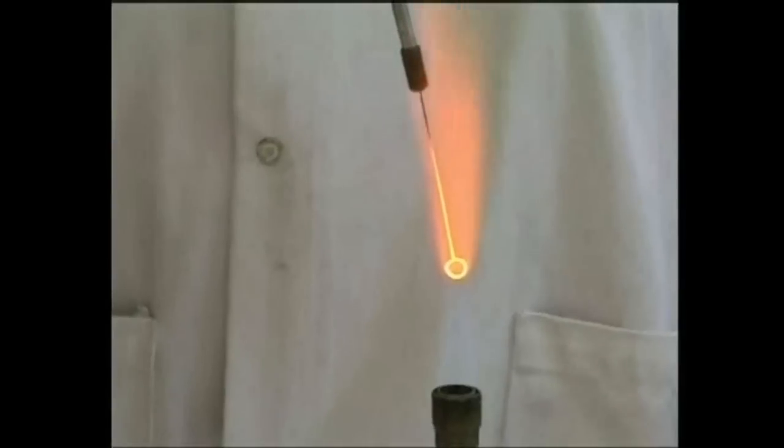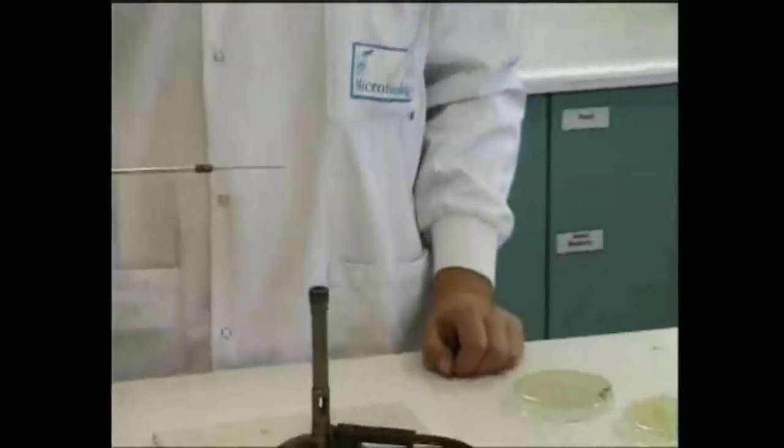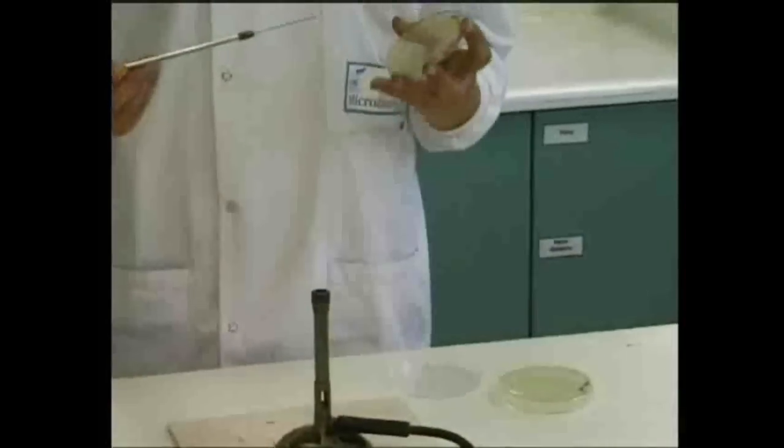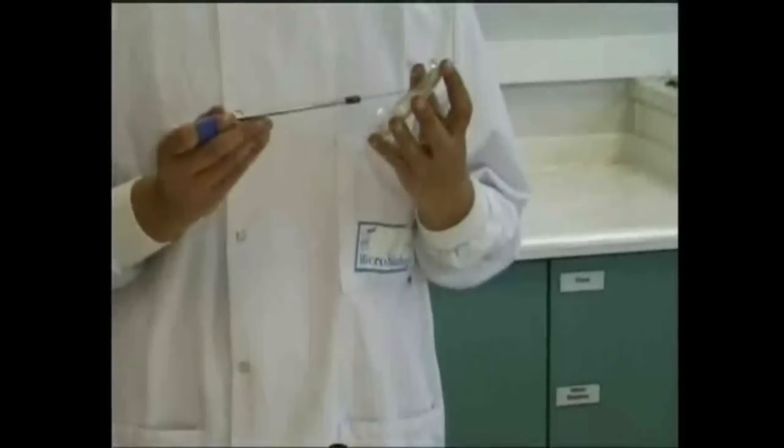Loops and wires are flamed by heating them in the Bunsen flame until they glow red. Hold the loop or wire almost vertically pointing downwards in the roaring flame so that its whole length is heated, and then allow it to cool before touching any cultures.